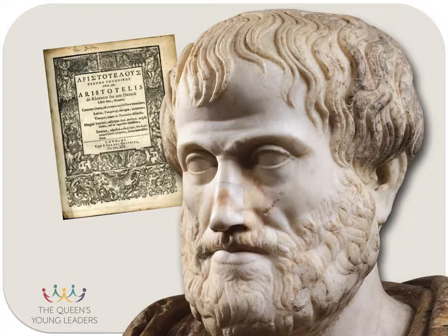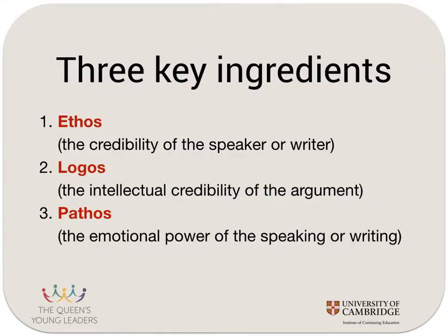The Greek philosopher Aristotle wrote a famous treatise on rhetoric nearly 2,300 years ago, which is still seen as the most important document on the subject. In it he identified three key ingredients for effective rhetoric: Ethos — the credibility of the speaker or the writer; Logos — the intellectual credibility of the argument; and Pathos — the emotional power of the speaking or the writing.